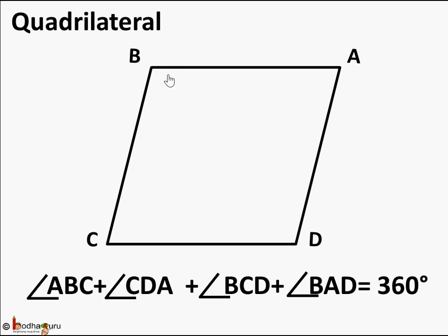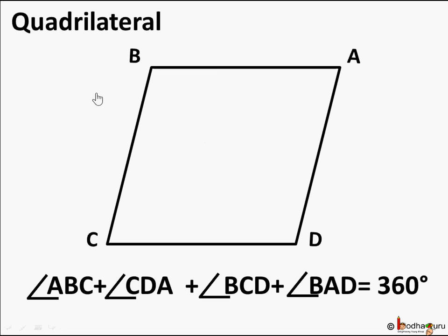Similarly, for any quadrilateral, the sum of all its four interior angles — angle ABC, angle BCD, angle CDA, and angle DAB — is equal to 360 degrees. So the sum of all four angles of a quadrilateral is 360 degrees.